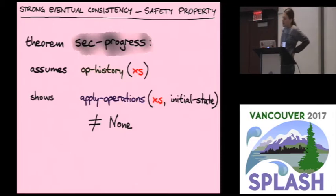Then progress is actually even simpler. That is just saying that we don't end up in an error state. We allow these operations, the return value is an option type, a maybe type, and we represent a failure with none as a final result. We're saying here that if xs is a valid operation history, then if you execute, if you apply those operations starting with a given initial state, then you don't end up in an error state. These are the two safety properties that we require.